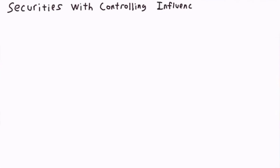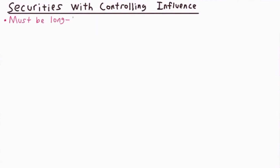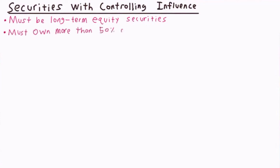Now let's talk about securities when the investor has a controlling influence over the investee. Just like with securities carrying significant influence, securities with controlling influence must be long-term equity securities. The difference is that now more than 50 percent of the voting stock or common stock of another corporation must be owned. With over 50 percent of the voting shares, the investor has complete control over all voting decisions, including election of the corporation's board of directors.